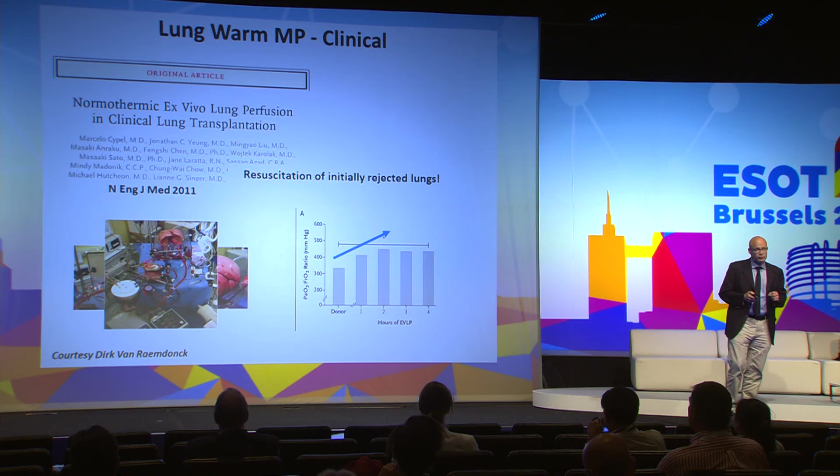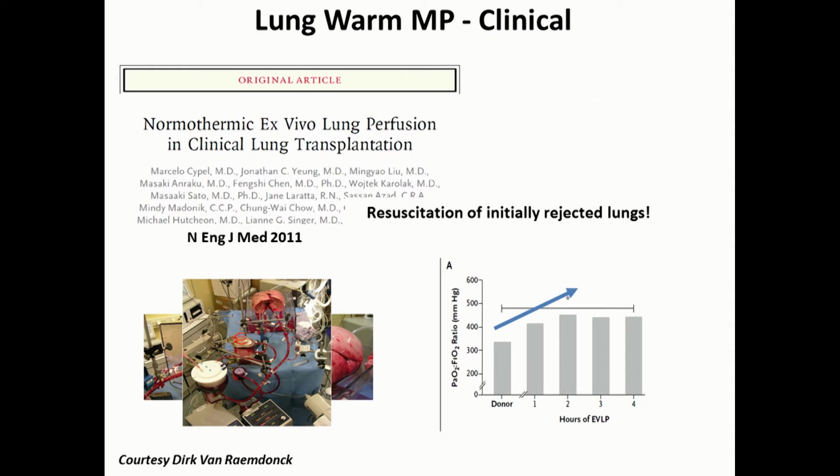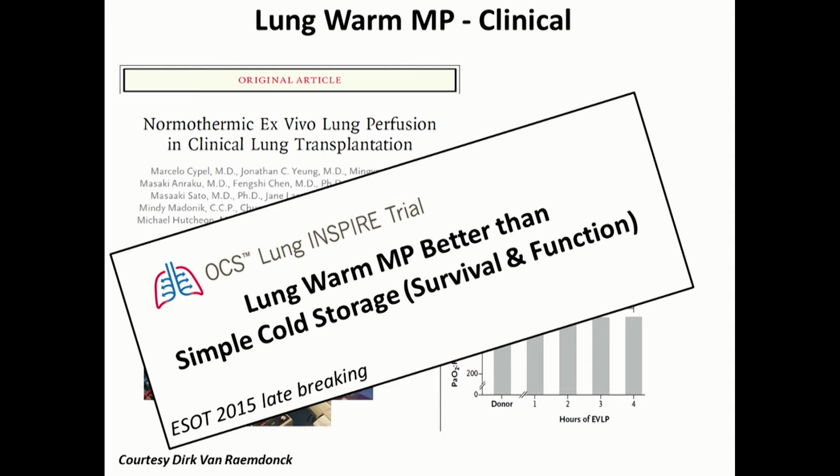The lung colleagues are the most advanced — they have directly used warm machine perfusion of the lungs to resuscitate lungs that would have otherwise been rejected, improving oxygenation and transplanting them successfully. I invite you to listen tomorrow to the late breaking abstract session where the results of the INSPIRE trial will be presented, showing for the first time ever in solid organ transplantation that warm perfusion is better than simple cold storage. Another advantage of warm perfusion is that it's the only preservation strategy allowing you to evaluate the metabolism and function of the organ, and thus probably to better predict post-transplant function.